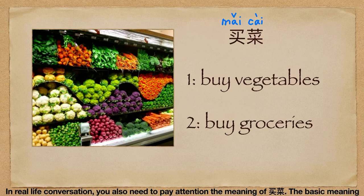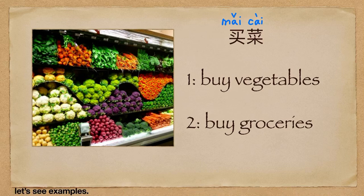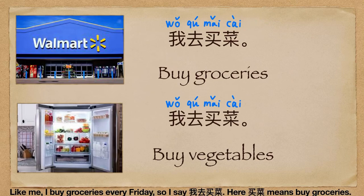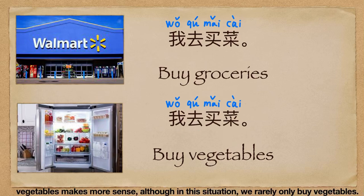In real-life conversation, you also need to pay attention to the meaning of 买菜. The basic meaning of 买菜 is buying vegetables. But sometimes, 买菜 can be used to say 'buy groceries.' For example, I buy groceries every Friday, so I say 我去买菜 — here 买菜 means buy groceries. When I have all kinds of food except vegetables, I say 我去买菜, and understanding 买菜 as buying vegetables makes more sense, although in this situation we rarely only buy vegetables.